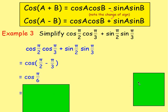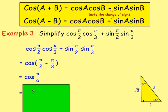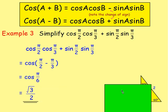Think about π/6 in terms of degrees and use your exact value triangles. π/6 is 30 degrees, so cos of 30 degrees — adjacent over hypotenuse — will be root 3 over 2.